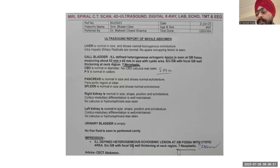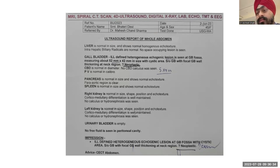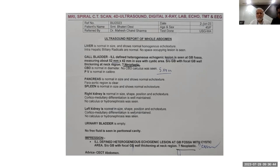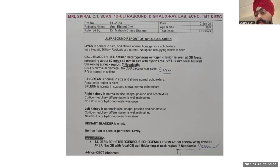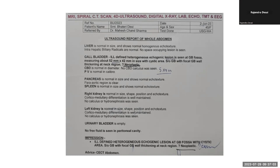On ultrasound, done at an outside center, it is suggestive of a well-defined heterogeneous region at the GB fossa, suggestive of focal GB wall thickening at the neck region — query neoplastic. Going by this, it looks like a malignancy of the GB neck which would be impinging upon the common bile duct.